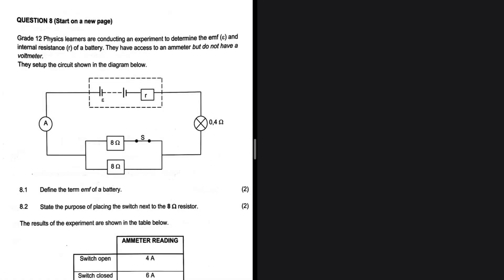The maximum energy provided by a battery per unit charge passing through it — that is 8.1. Let's go ahead and look at 8.2: state the purpose of placing the switch next to the 8 ohm resistor.